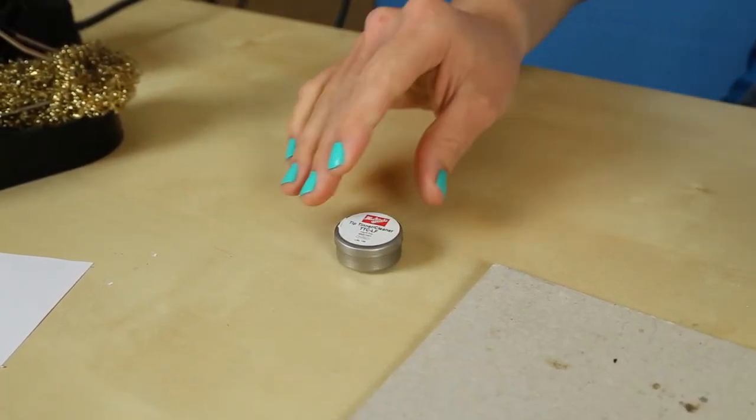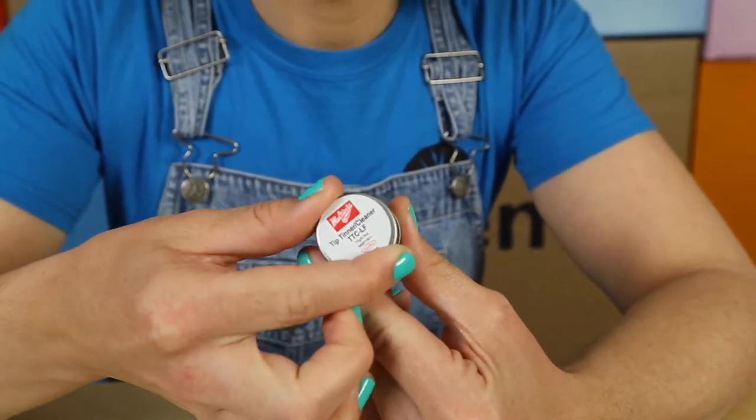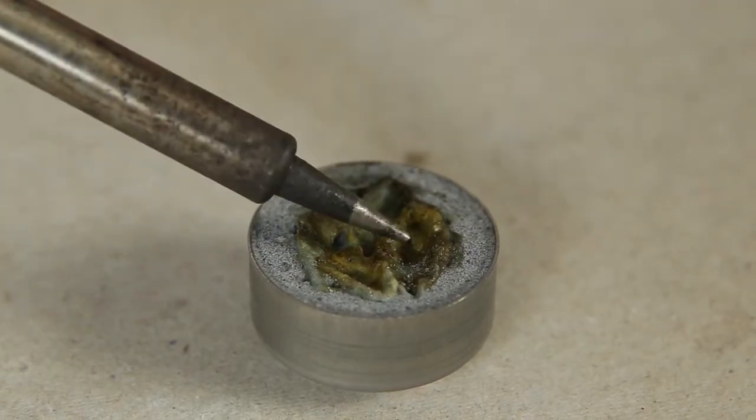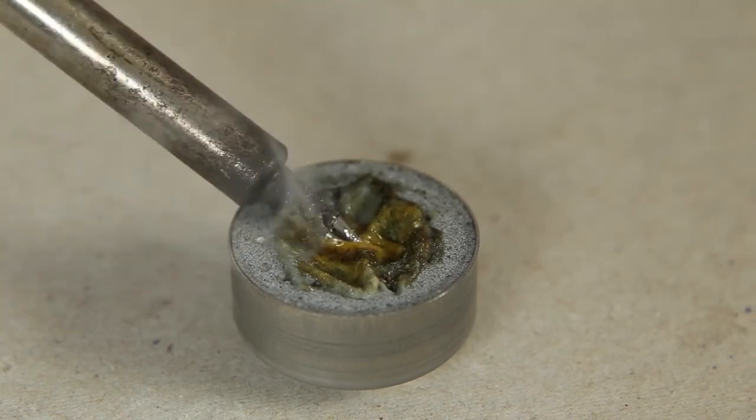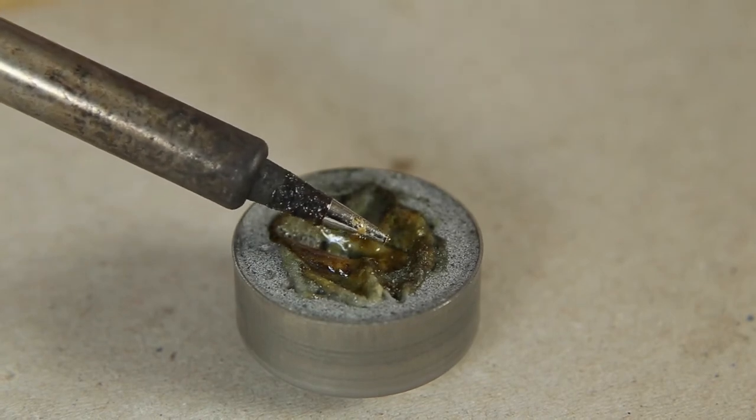You can also use a professional tip cleaner. We include this in our Starts soldering kit. It removes any impurities and oxidized metal from the tip of your soldering iron. This will keep it cleaner for longer.